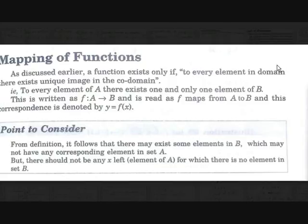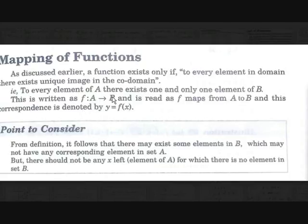For all elements of the domain there should be a unique element in the codomain. If we take any element in the domain set, there should be only one image for that element. To every element of A there exists one and only one element of B. This is written as f: A → B, read as 'f maps from A to B', and denoted by y = f(x).